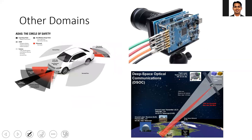Other applications include ADAS — autonomous driving systems — where you have many sensors, need to collect data, take decisions, and activate actuators. This cannot be done via cloud because you can't tolerate that much latency. You need edge devices on or near the car that are capable of making decisions, and that's why you need to implement your algorithms on edge devices and not on the cloud.